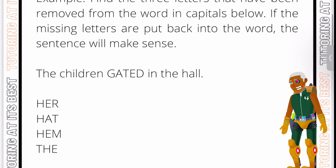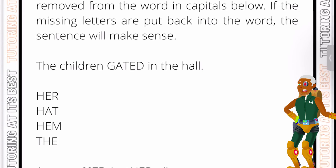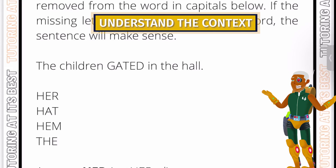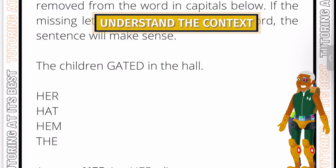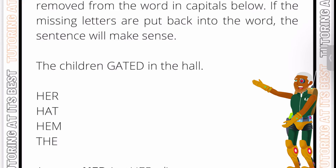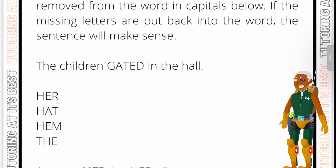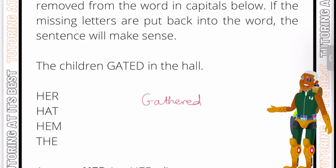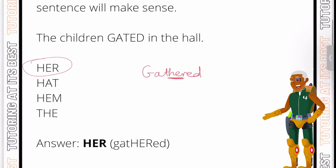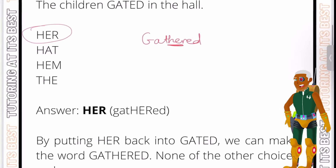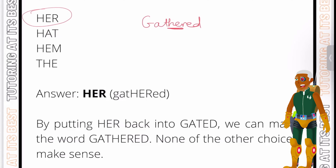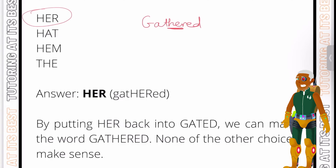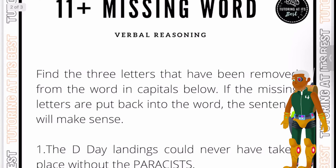Let's take a look at the first example: 'The children GA_ED in the hall.' So we've got three letters that are missing. Looking at the context — children in the hall — it seems there must be a group of children gathered. The word is 'gathered', and we're missing the letters H-E-R. By putting 'her' back into 'gated' we can make the word 'gathered'. Once again, find the context and then find the letters that make sense.